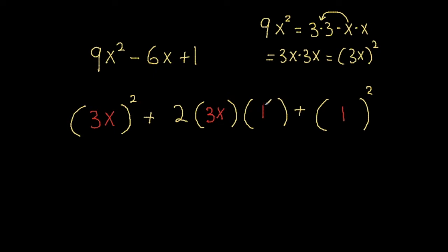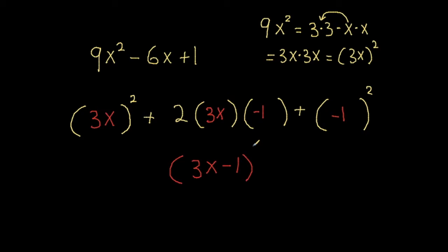Instead of multiplying by 1 we need to multiply by negative 1, so we change that 1 to a negative 1. Now the two terms inside all of those brackets are 3x and negative 1. We combine them into an expression, 3x and negative 1, and we square that expression. So we factorize 9x squared minus 6x plus 1 into the quantity (3x minus 1) all squared.